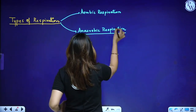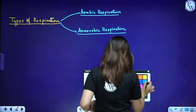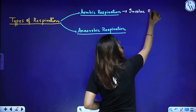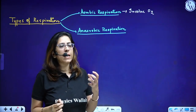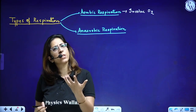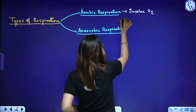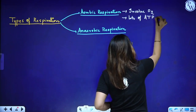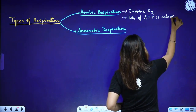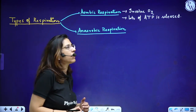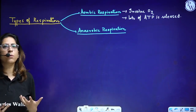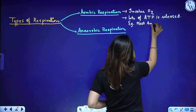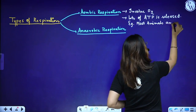Aerobic respiration involves oxygen, and lots of ATP is released. Examples are most animals and plants.